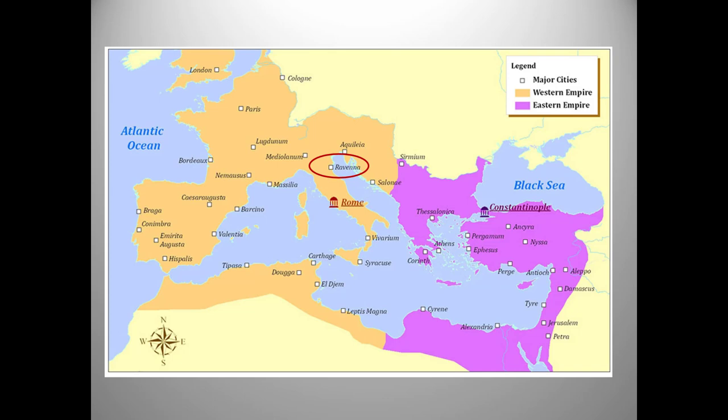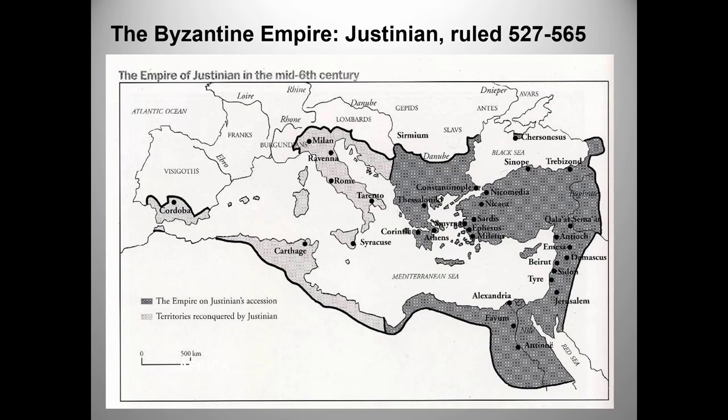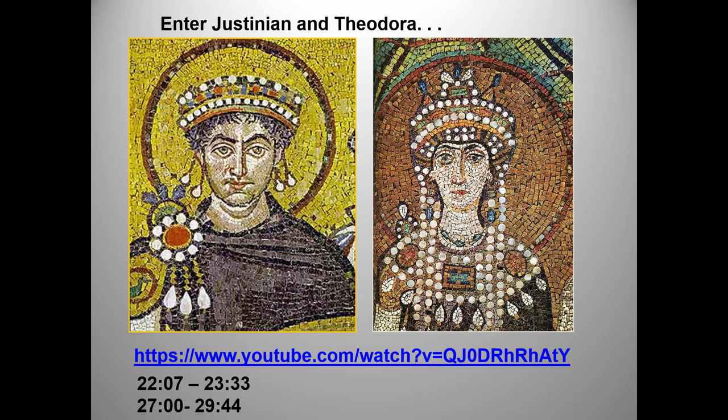Now let's move into some Byzantine history. All Byzantine emperors ruled as head of both the government and the church. The struggles between popes and kings that would define much of western European medieval history had no real parallel in the Byzantine Empire. Patriarchs and bishops were important personages, but when the emperor said jump, the church leaders pretty much asked how high.